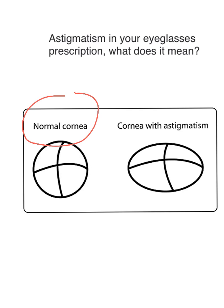In a cornea with astigmatism, the cornea is shaped more like a football. The curvature of the vertical meridian is different from the curvature of the horizontal meridian.